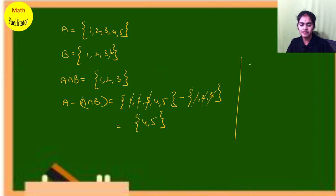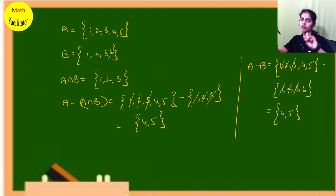Now let me find A minus B. A is {1, 2, 3, 4, 5} minus B is {1, 2, 3, 6}. Remove the common elements from A. What are the common elements? {1, 2, 3}. After removing them, you get {4, 5}.